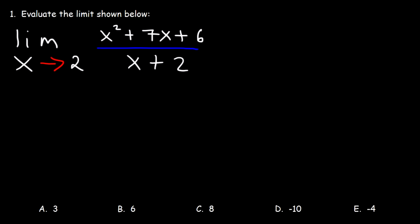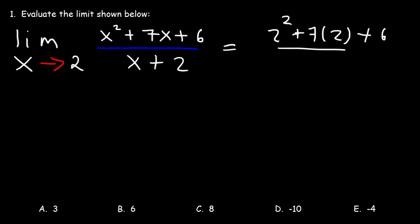For number 1, if we plug in 2, notice that we will get 4 in the bottom. We won't get a 0 in the denominator of the fraction. So therefore we can use direct substitution to get the answer. So let's replace x with 2. So it's going to be 2 squared plus 7 times 2 plus 6 divided by 2 plus 2.